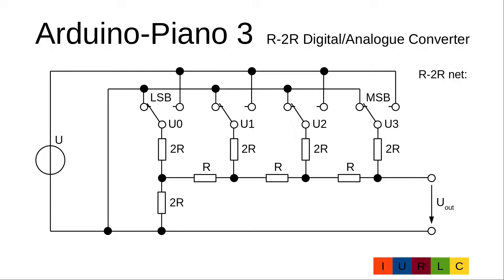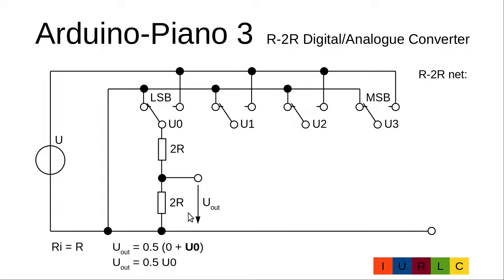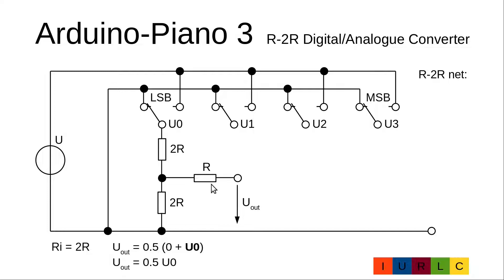With these basics we can now understand and calculate the output voltage step by step of this 4-bit R2R digital analog converter. These are the output pins of the Arduino — here the least significant bit and here the most significant bit. Each bit can be either low (0V) or high (5V). Starting with the first stage: two voltage sources linked via two 2R resistors with the middle point fed out. The internal resistance is R and the output voltage is 0.5 times U0, giving Uout = 0.5·U0. Adding a series resistance makes the internal resistance 2R.